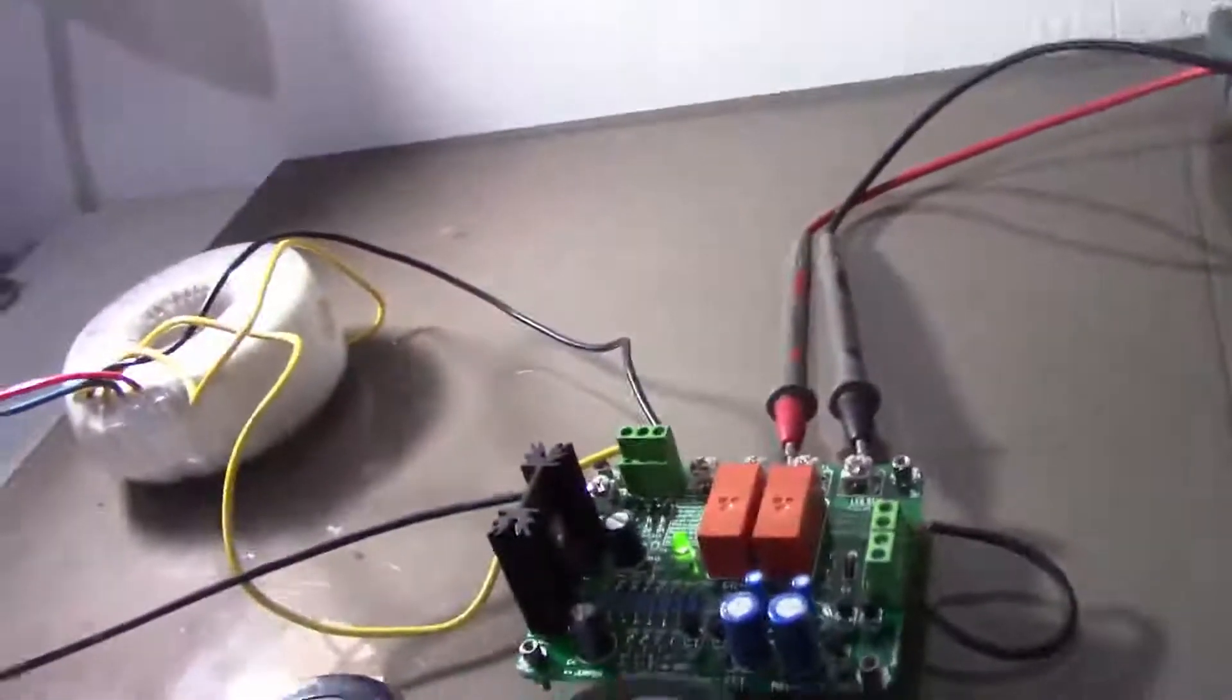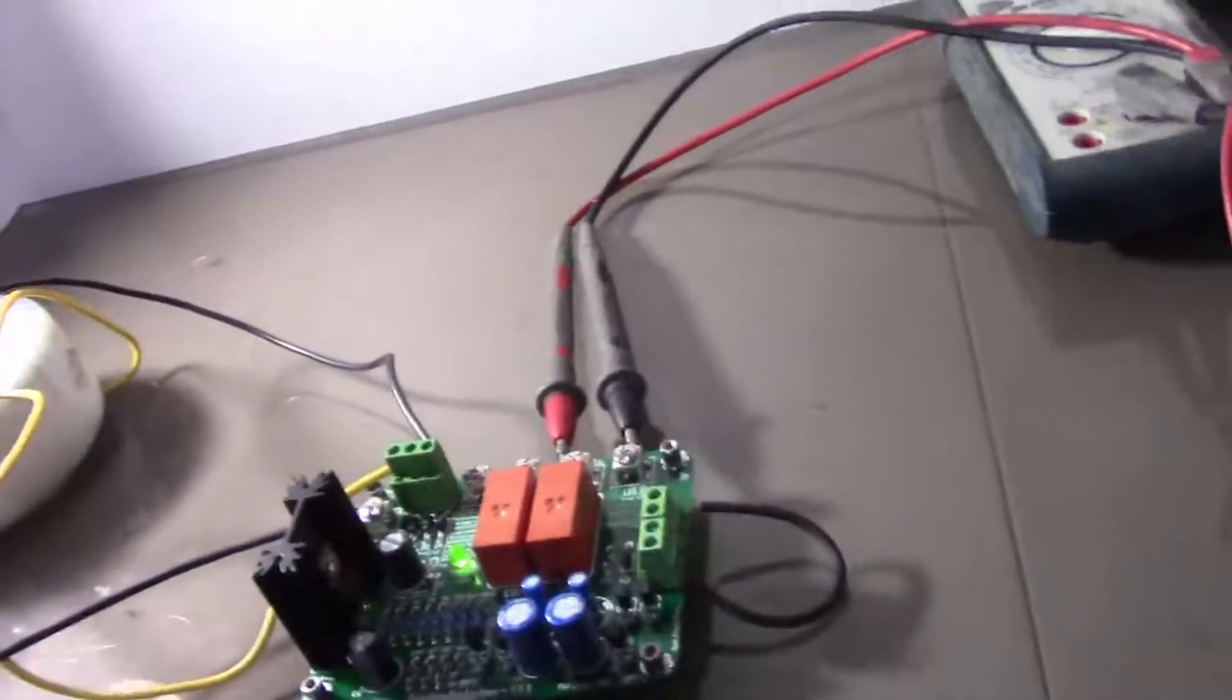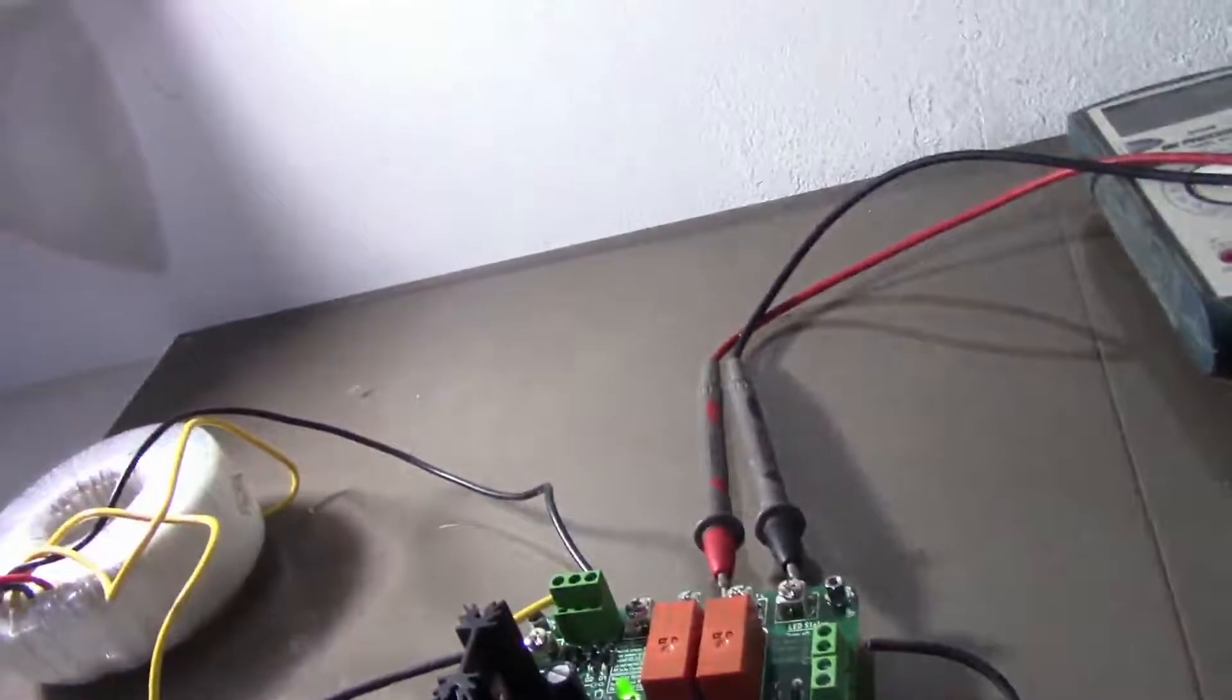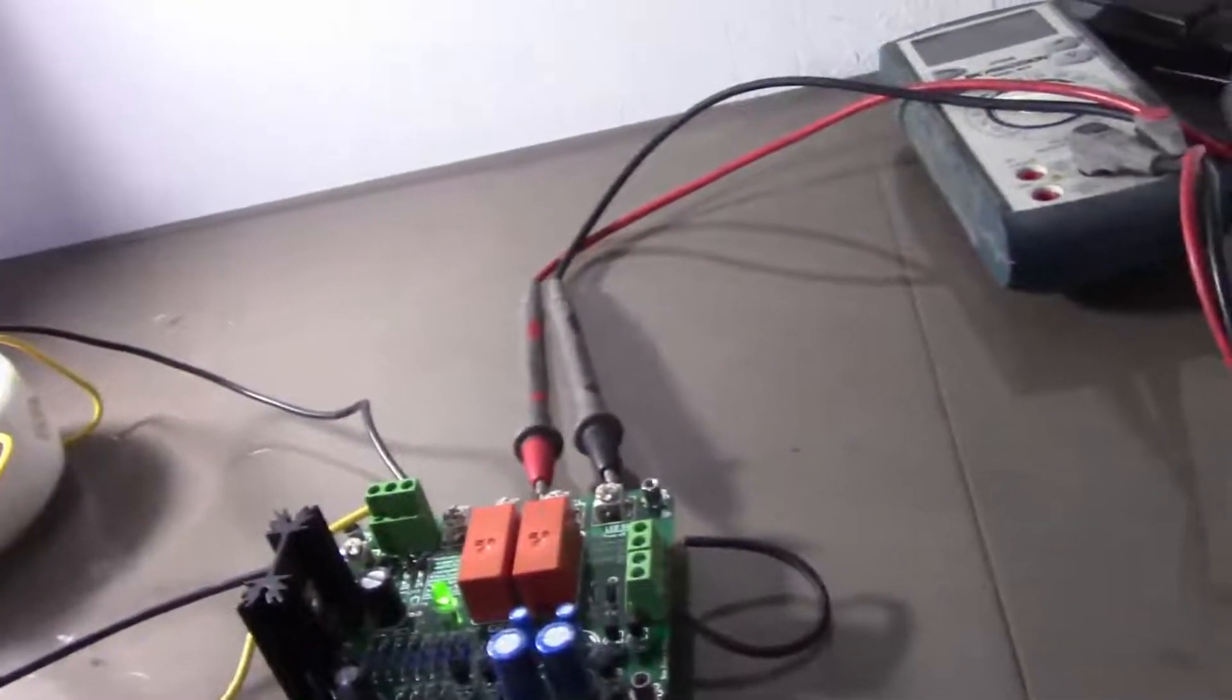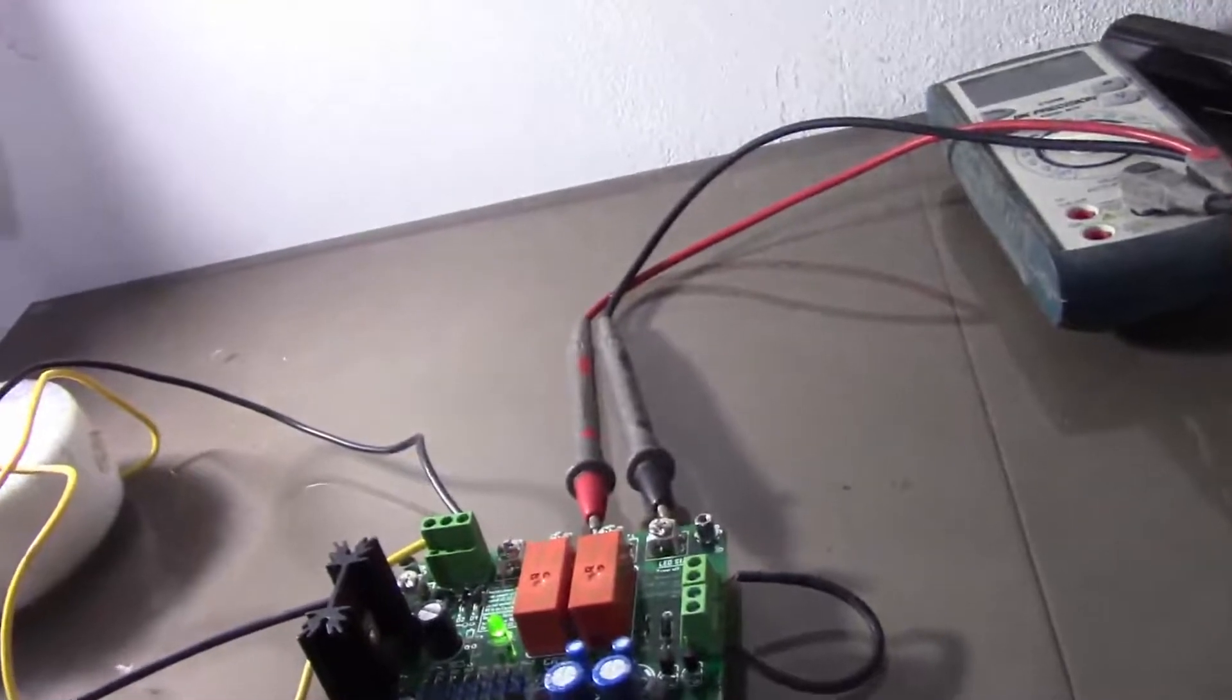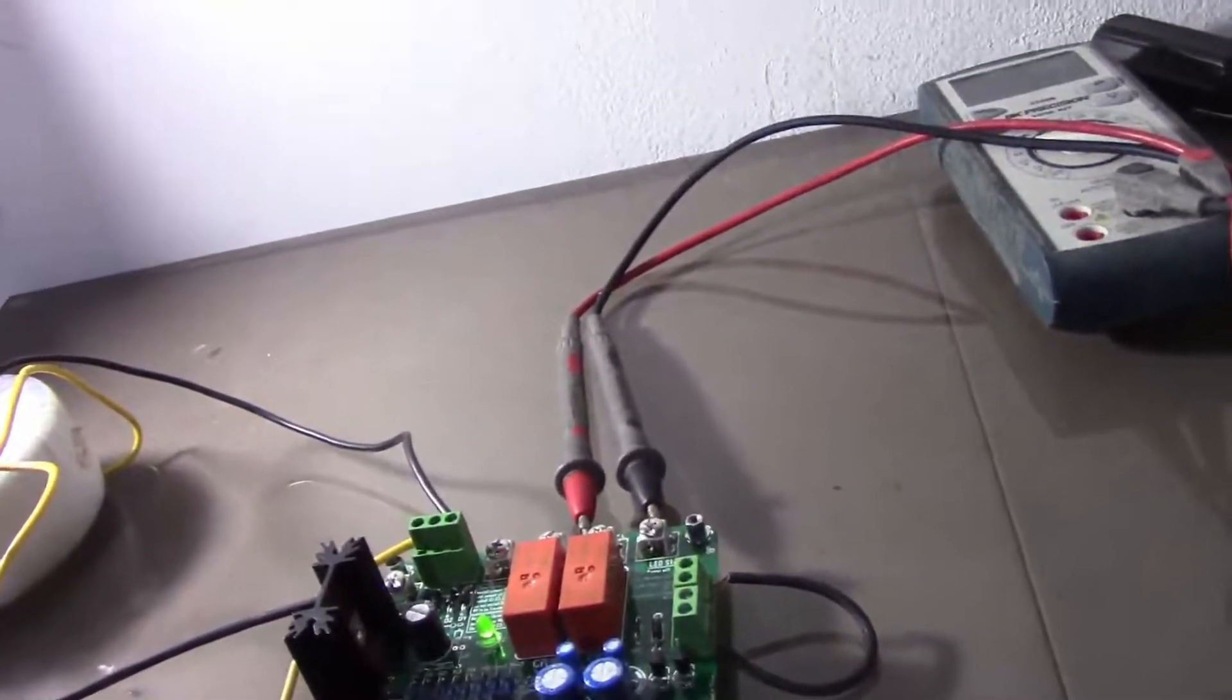So right now I'm going to test it with the negative voltage. Should have the same behavior. It should turn off the relay. That's the purpose. You should have the negative and the positive voltage. There you go.